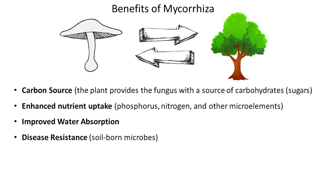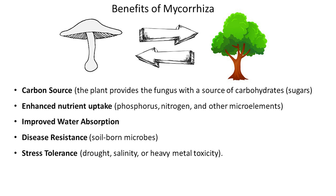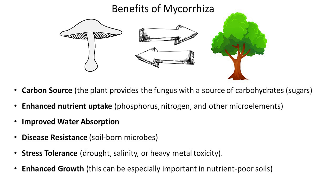Some mycorrhizal associations can contribute to the plant's defense against certain soil-borne pathogens, and it can improve the plant's ability to tolerate environmental stressors, such as drought, salinity, or heavy metal toxicity. In addition, mycorrhiza frequently leads to increased plant growth, and often it's crucial for fungal partner growth. Also, mycorrhiza plays a big role in improvement of soil structure.